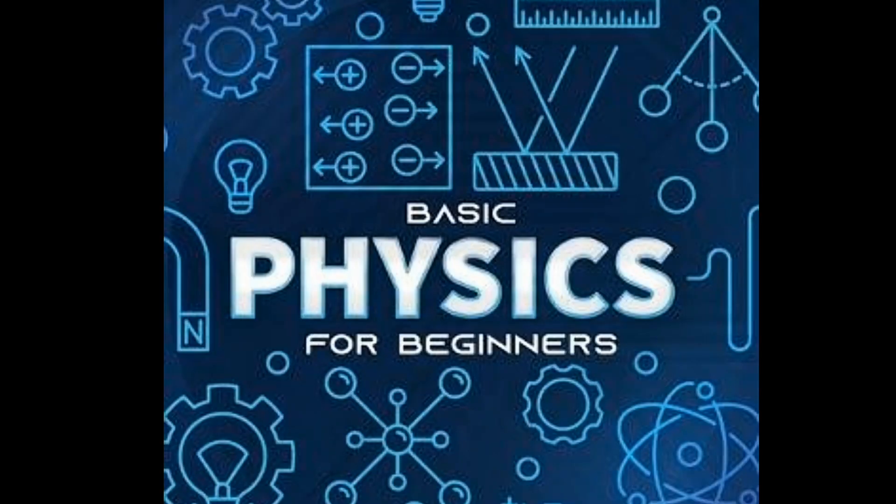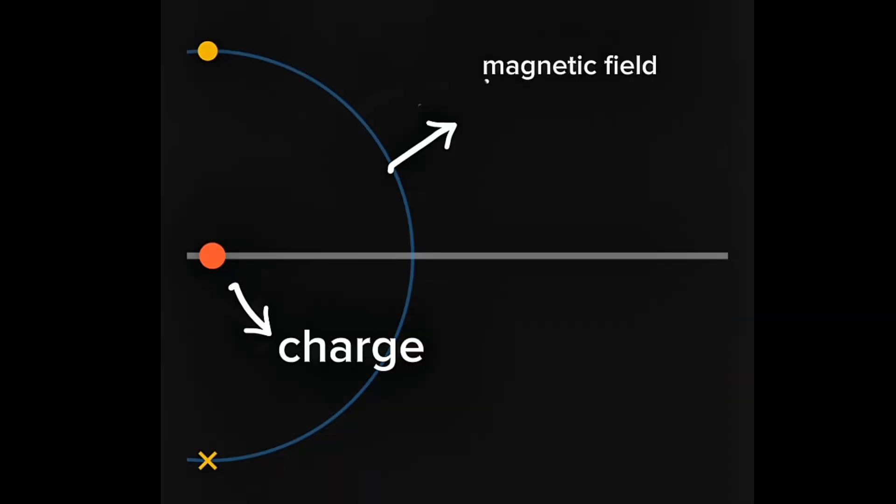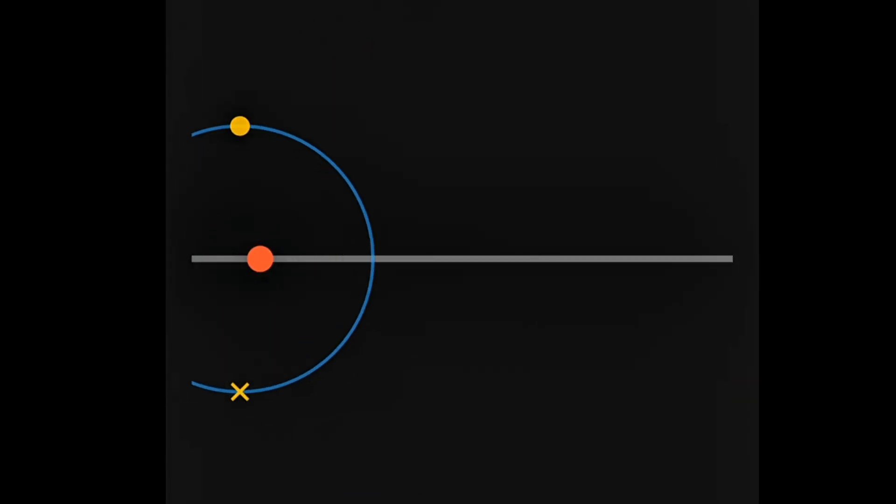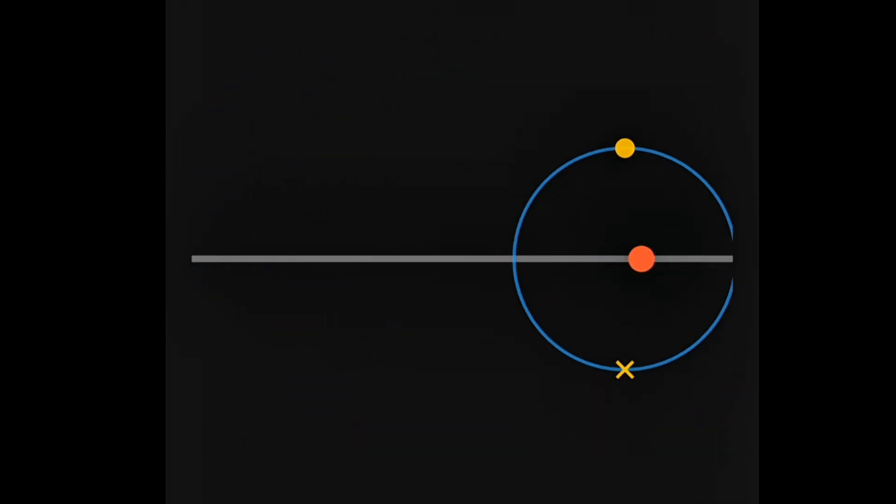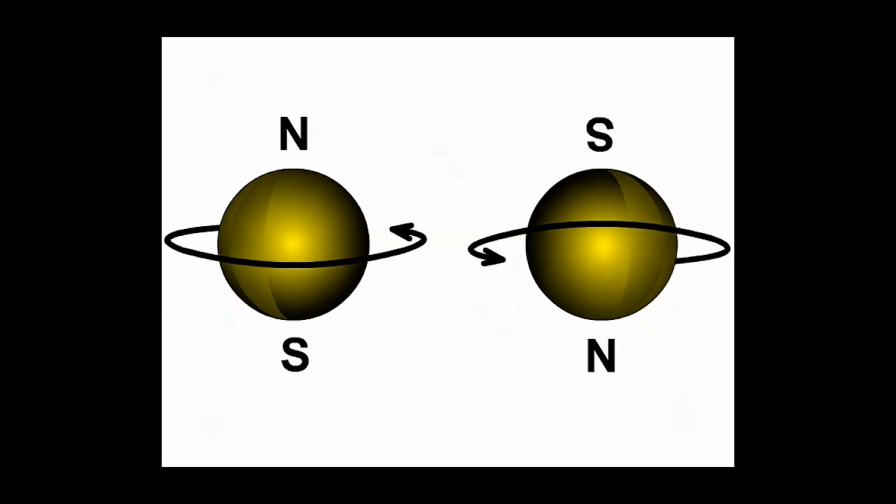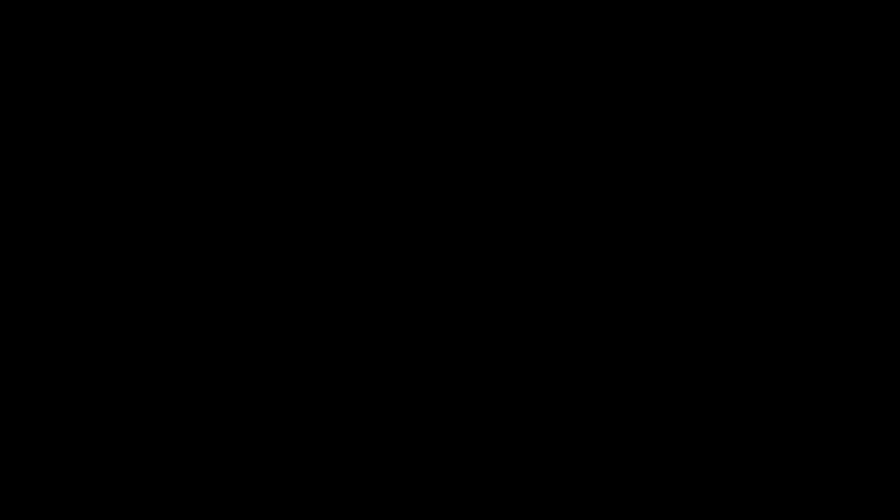Before diving into those predictions, let's clear up some basic physics. When a charged thing moves, it produces a magnetic field around it. In the same way, when a charge is spinning, it also produces a magnetic field around it. We know that electrons are charged particles which have spin.